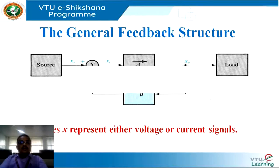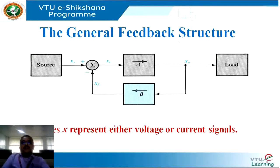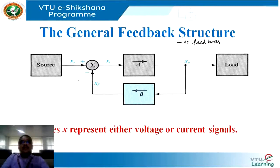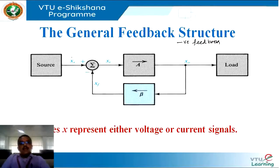Let us look at the general feedback structure of an amplifier. Remember, when I quote the general feedback structure, I am pointing at the negative feedback — this block diagram is applicable to negative feedback. Let us get familiarized with the different blocks. The source block is where the signal comes out that you need to amplify; we indicate its output as Xs. This quantity could be either a voltage or current, as is the case with all other x-terms in the block diagram.